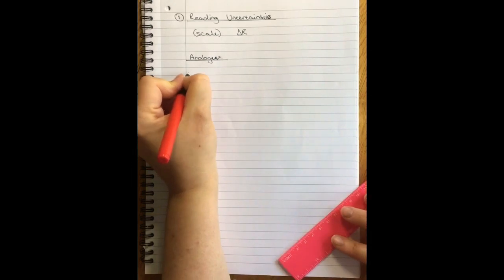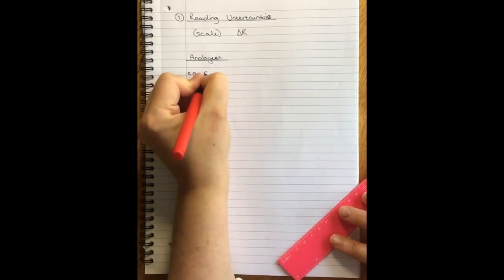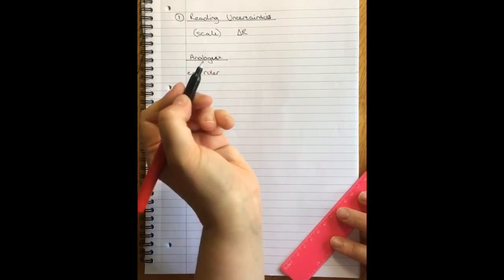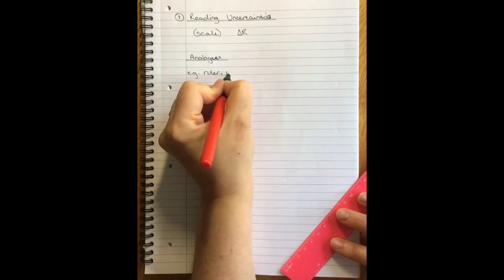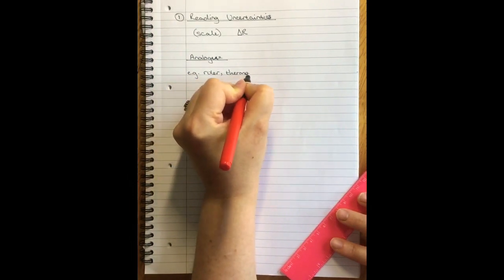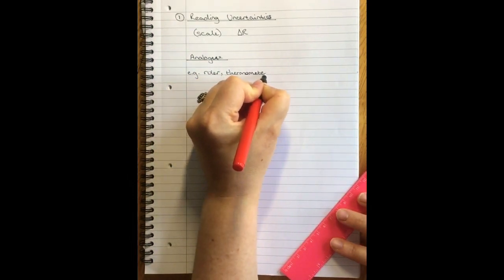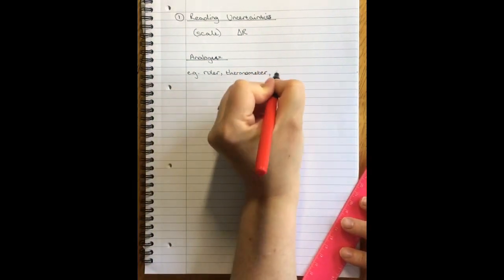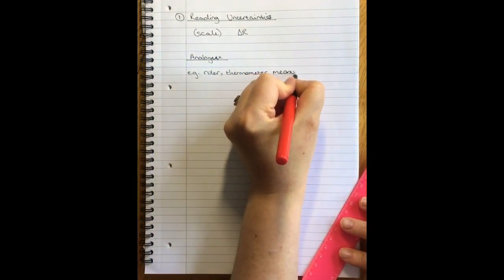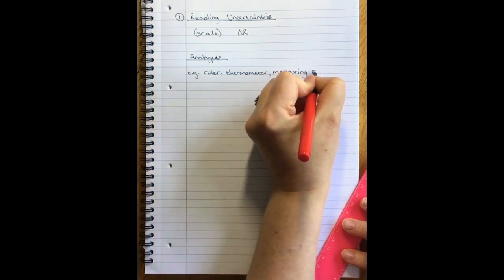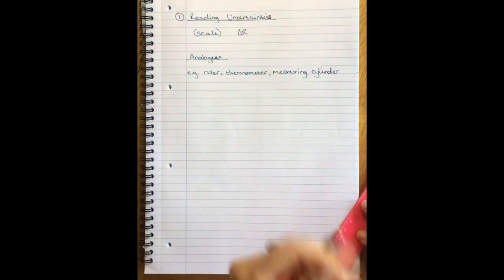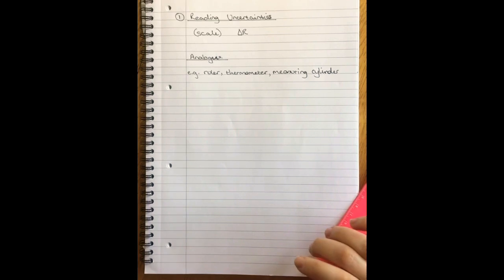Some examples of this are liquid and glass thermometers, measuring cylinders. These are all things where you read a measurement off a scale.